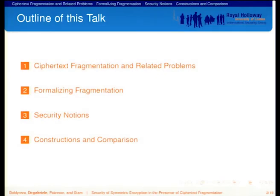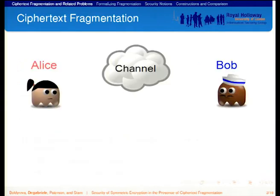I start this talk with an outline of what ciphertext fragmentation is. Then I'll go on to say how we formalize fragmentation. I'll describe some security notions that we introduce, and conclude with a comparison of our constructions. I have to say that I omit a lot of details, especially parts three and four, so I will mostly focus on the motivation for this work and leave the details in the paper, just giving you a small flavor of what we do.